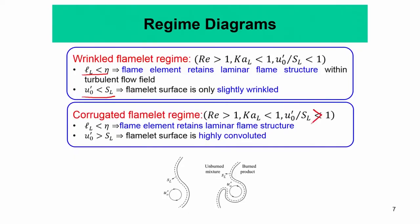Note: U prime by SL being greater than 1 here is a typo — please correct it to greater than 1. In the corrugated flame regime, the flame thickness is less than the Kolmogorov length scale, the laminar flame structure is retained, but U prime by SL is greater than 1, so the flame surface is highly convoluted.